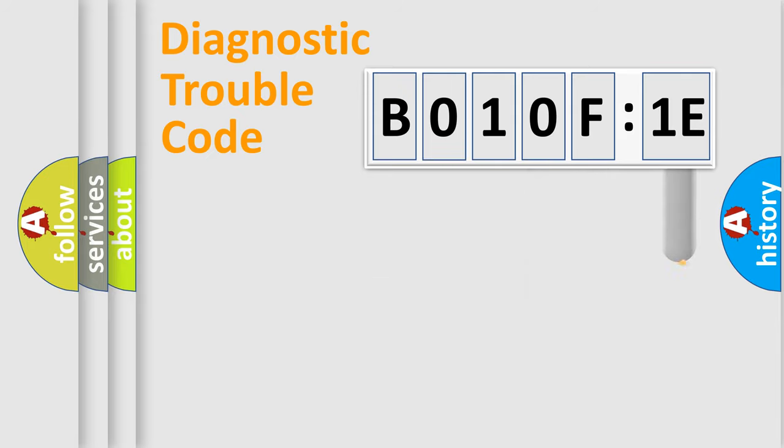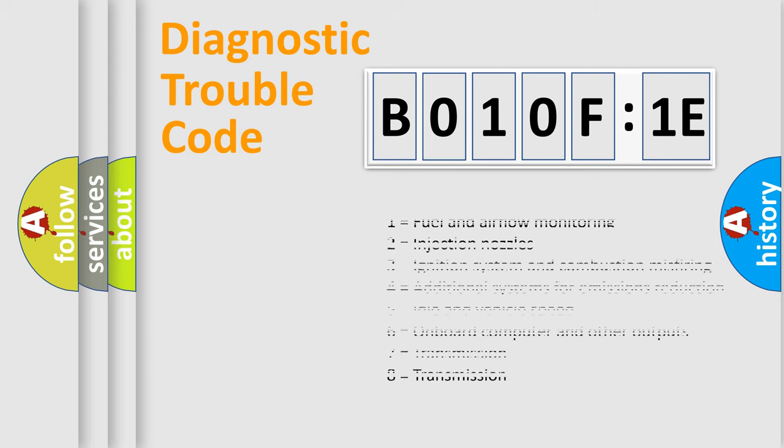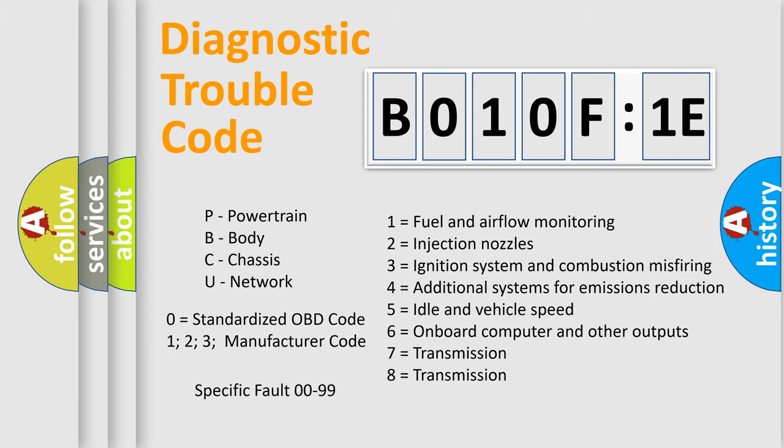The add-on to the error code serves to specify the status in more detail, for example, a short to the ground. Let's not forget that such a division is valid only if the second character code is expressed by the number zero.